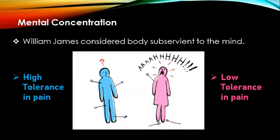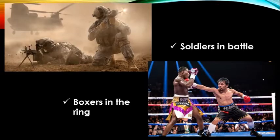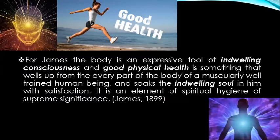James considered the body as subservient to the mind. For example, mental concentration can be so tightly focused that even in severe pain, the ordinary sensations seem not to be felt. A simple example could be the numerous reports of soldiers in battle or a boxer in the ring who suffers severe wounds but does not notice them until the intensity of the fighting abates. For James, the body is an expressive tool of indwelling consciousness, and good physical health rolls up from every part of the body of a muscularily well-trained human being and soaks the indwelling soul with satisfaction.